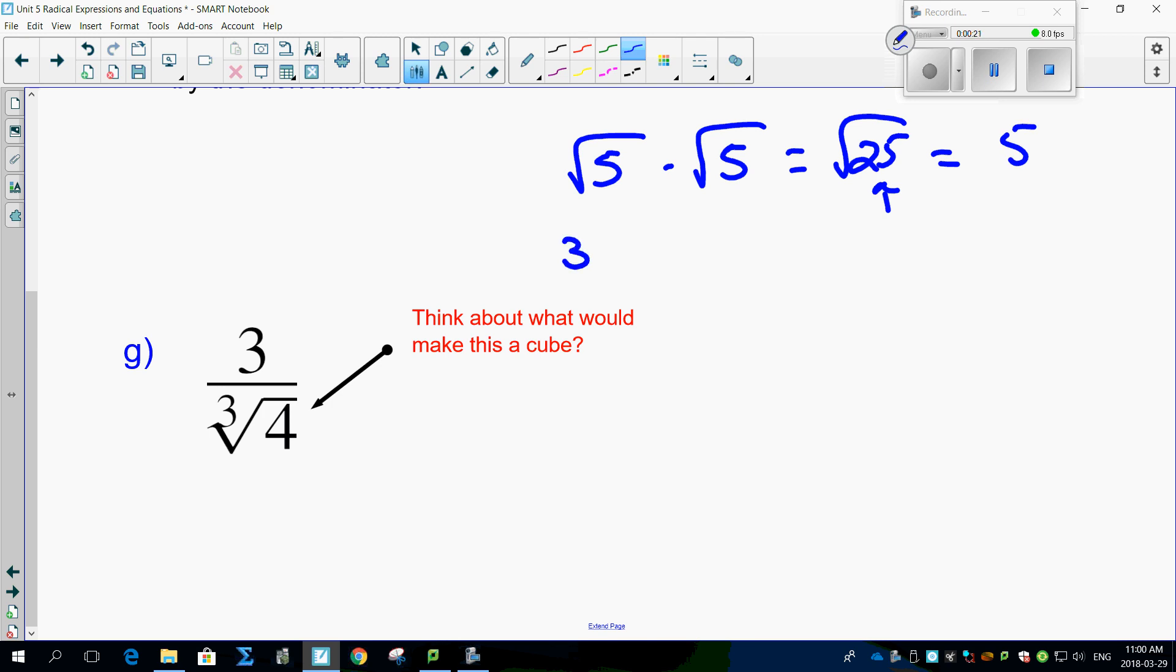But what if this was the cubed root of 5? Because if you multiply it again by the cubed root of 5, you'd get the cube root of 25, which, guess what? It's not cube rootable. So what do you do? Well, simple. Multiply it. If there's three of them, multiply it three times. Think about this. 5 times 5 times 5 makes 125, and 125 is cube rootable to be plain old 5.